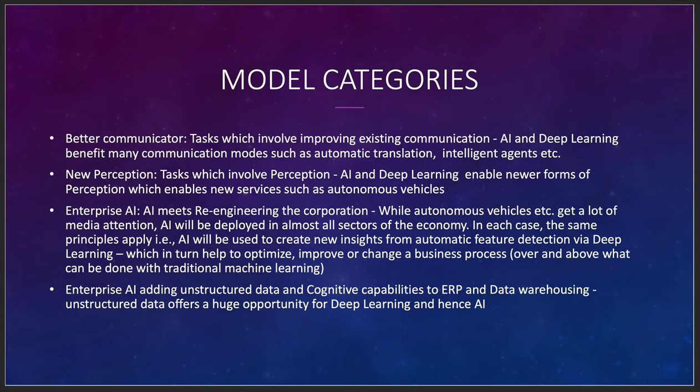New perception tasks involve enabling newer forms of perception, which enables new services such as autonomous vehicles — Waymo, Tesla, Uber, and others working in the self-driving car space. There's been a lot learned about how smart cars, smart roads, and smart devices intersect. That ability to take an environment and translate it into a computer model has come a long way since MIT started in the 1970s — to where today your Tesla can just drive itself to wherever your key fob is.